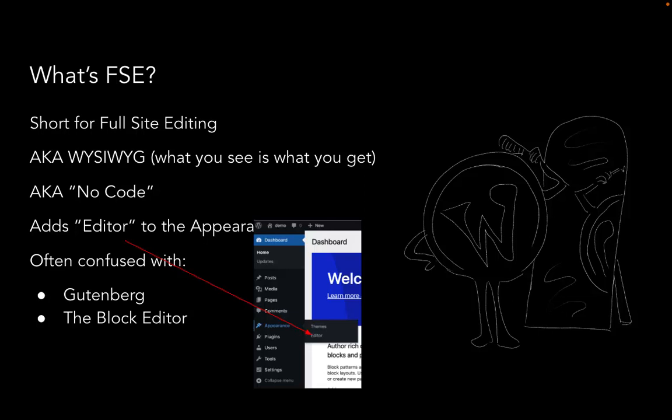Full site editing is an idea that came about in WordPress 5.8. We're now on 6.1, almost on the dawn of 6.2, so it's a growing technology. Something has changed in the Appearance menu — when you're logged into WordPress and look in Appearance, you'll see the word 'Editor' appears. That's where full site editing lives.